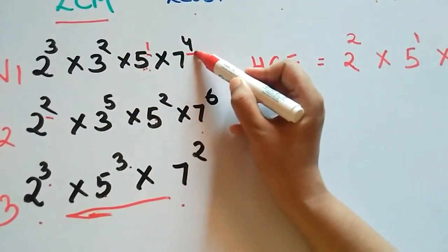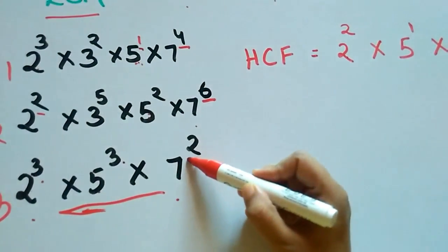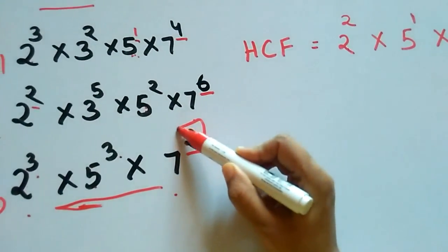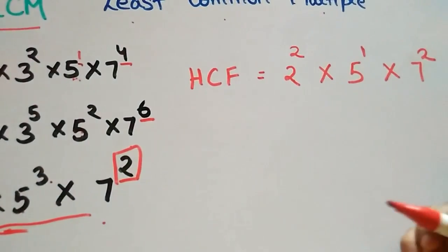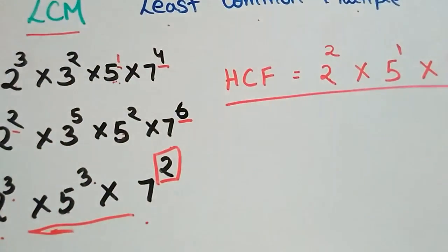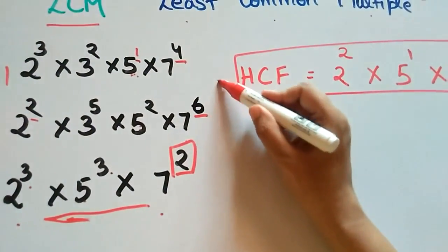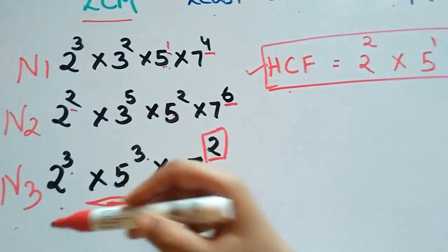For 7: 7^4, 7^6, 7^2. So 2 is the least one, so 7^2. This is your HCF of all three numbers.